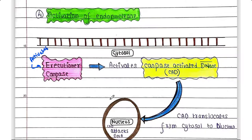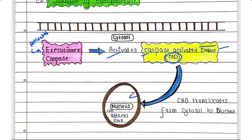The next target of executioner caspase is endonucleases. When activated, executioner caspase activates caspase-activated DNases, called CAD. These are proteins found in the cytosol that can cleave DNA, and they are called caspase-activated because they are activated by caspase. Once activated, CAD translocates from the cytosol to the nucleus, where it attacks and cleaves DNA, so the cell is not able to survive.